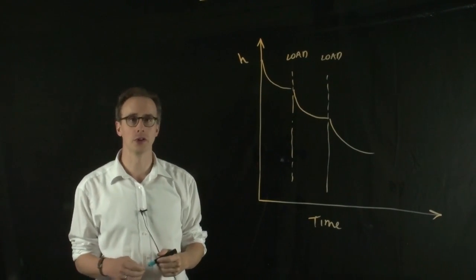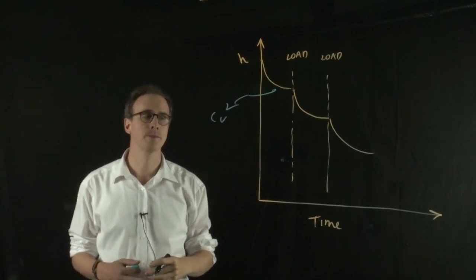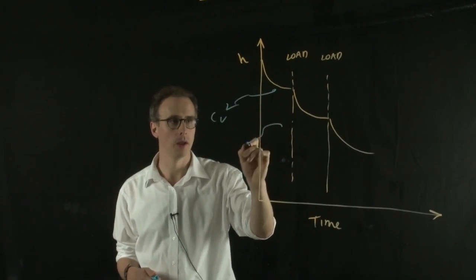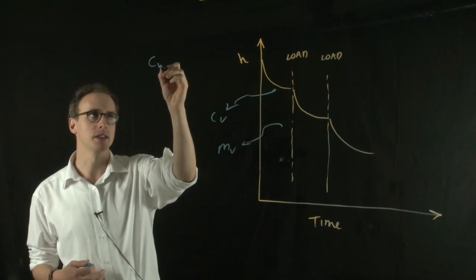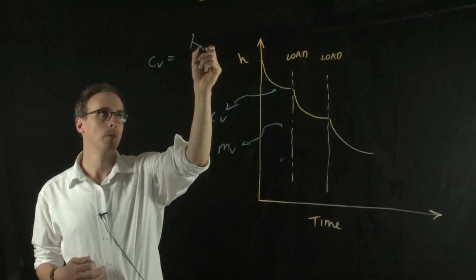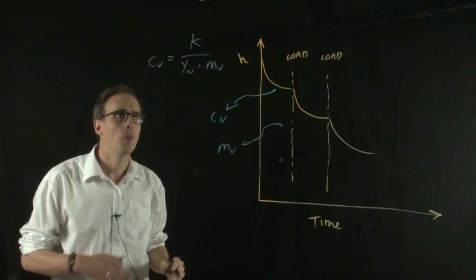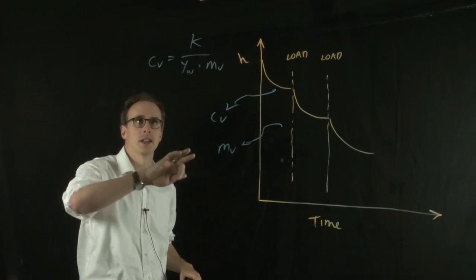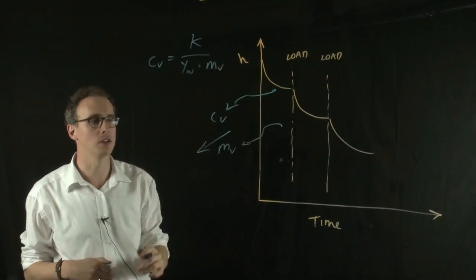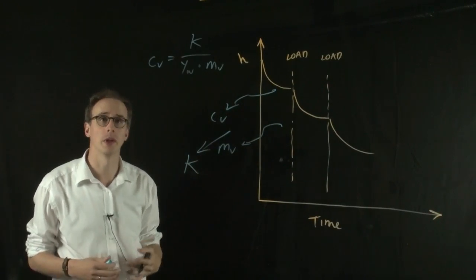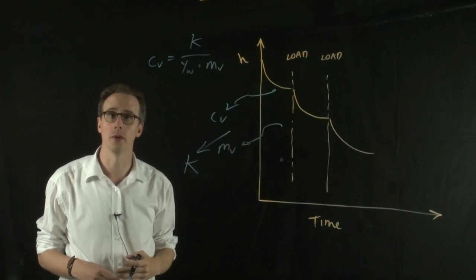Another interesting thing to point out from the odometer test is if we use the root time method to get a Cv value, and we can also derive an Mv value from this test, if we go back to the equation that relates Cv to Mv, and we can generate Cv and Mv from this test, the only unknown within this equation is permeability. So another interesting aspect is that we could use the odometer data to derive a term for permeability. And that adds just an extra bit of value to this test, and it's something that you should work out if you're doing it.